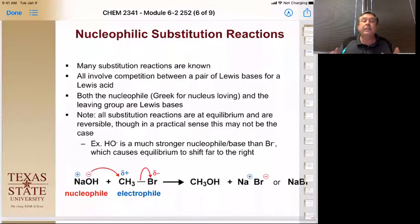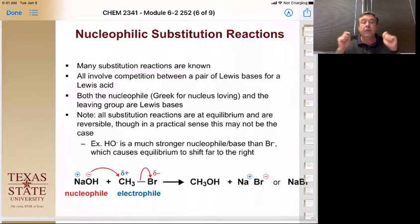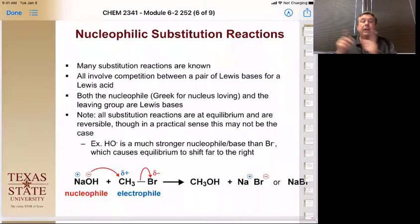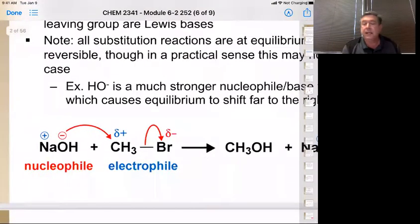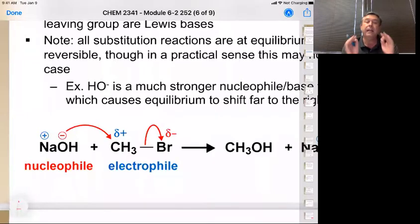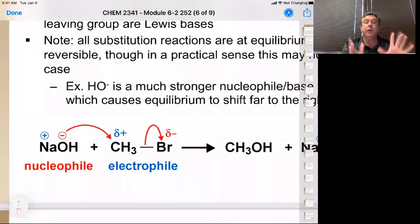These reactions always involve a competition between a pair of Lewis bases or acids. Remember: a nucleophile is a Lewis base; an electrophile is a Lewis acid. When you go to the other side of the reaction, you've swapped positions — one is going to be the Lewis acid and one is going to be the conjugate base. In this reaction here, it's easy to identify the nucleophile because it usually has a negative charge or at least a lone pair of electrons.